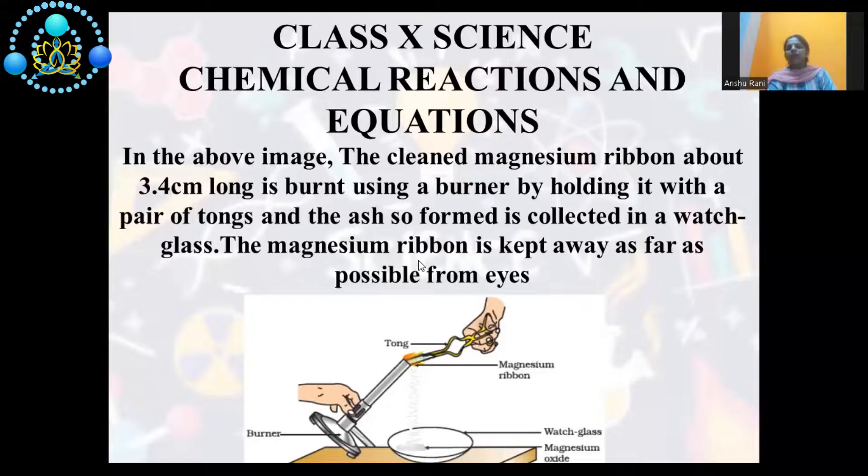What is happening in this reaction? You can see magnesium ribbon is burning in presence of oxygen. First of all, we will discuss this equation. Magnesium ribbon, when burns in presence of oxygen, it forms magnesium oxide, MgO.